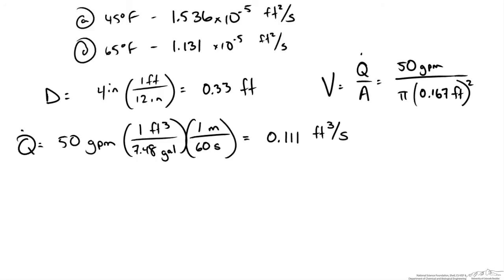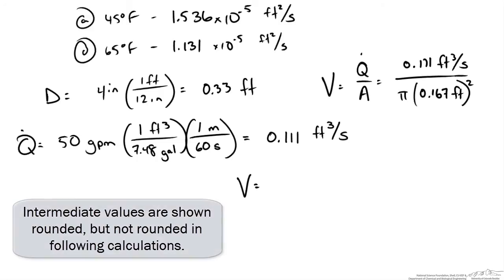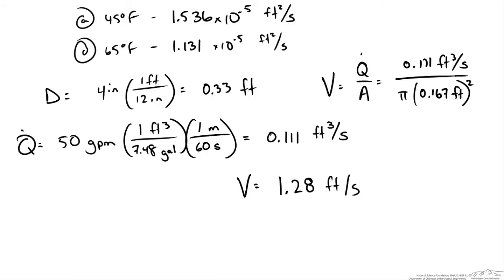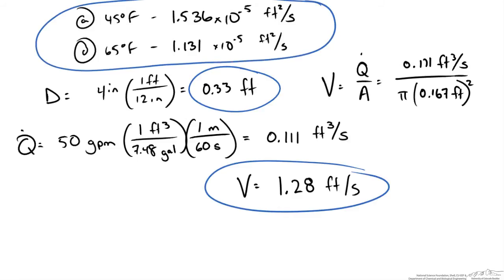Now we can plug that into our velocity calculation and we should get a velocity of 1.28 feet per second. So now we have our velocity, our diameter, and our kinematic viscosities to calculate our Reynolds numbers.